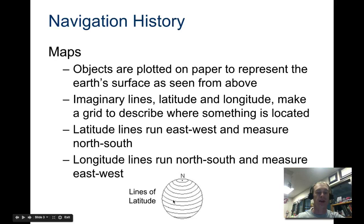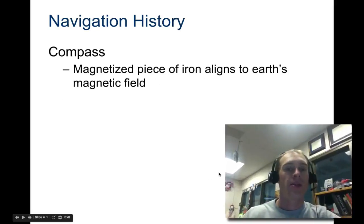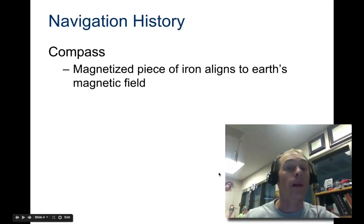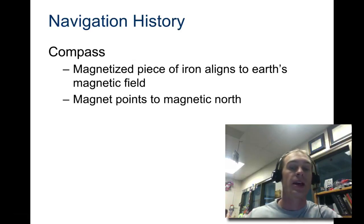Here's an example of lines of latitude — they run east-west but measure north-south distances. And then longitude lines run the other way. Then we get into the compass, which is just a magnetized piece of iron that aligns to a magnetic field.